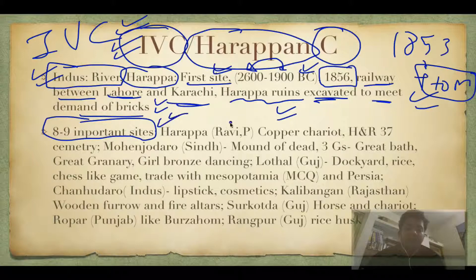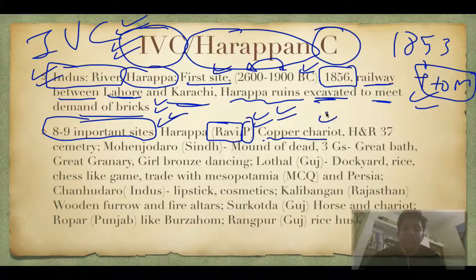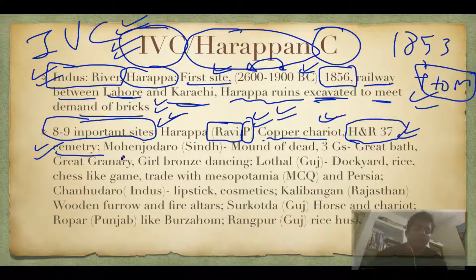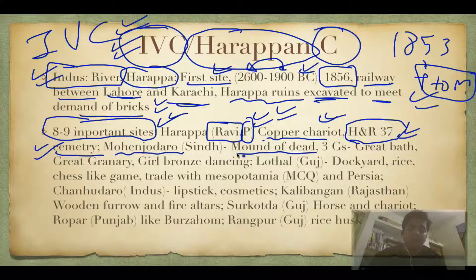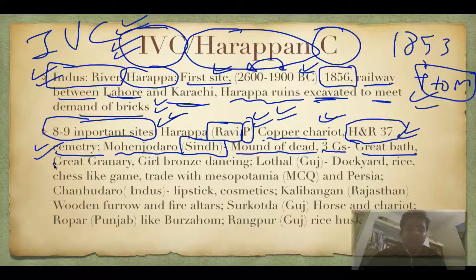There are eight to nine important IVC sites. First, Harappa is near the Ravi River in Pakistan. Notable finds include a copper chariot, various trade evidences, and the H&R-37 cemetery — a type of burial site. Mohenjodaro literally means 'mound of the dead,' as many skulls were found during excavation. It is also in Sindh, Pakistan, and is famous for the three G's: Great Bath, Great Granary, and the Girl — a bronze dancing statue of a girl.